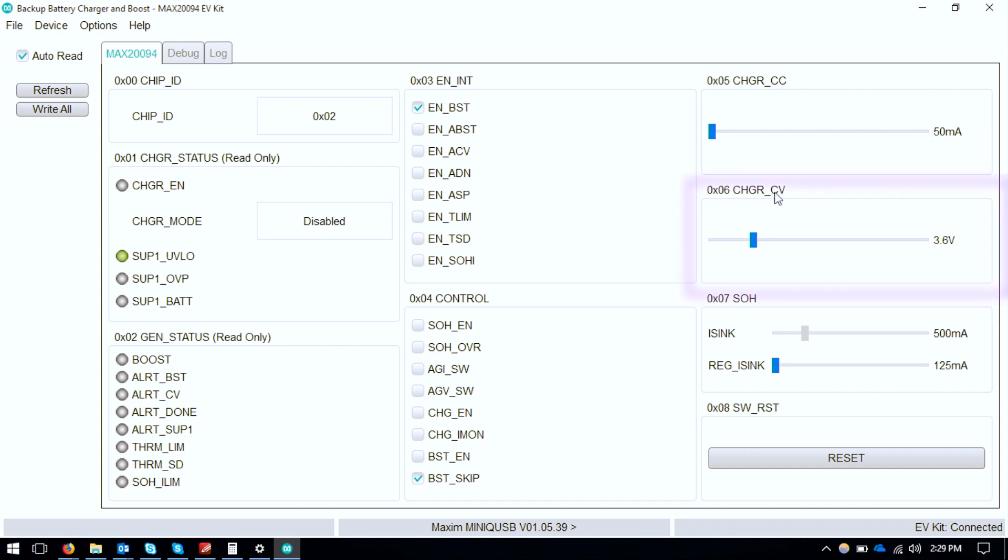Charger CV is the threshold so we set this to make sure that the controller knows to switch from continuous current mode to continuous voltage mode once it hits the threshold voltage. This battery will want to go to 3.2 volts on this one. This will really depend on the type of battery you're using so just make sure to check the manufacturing data sheet for that.